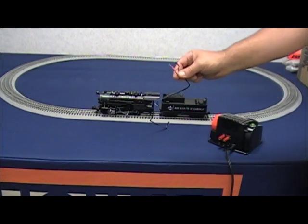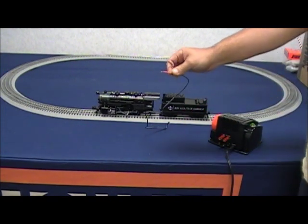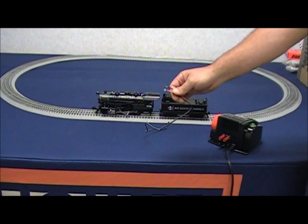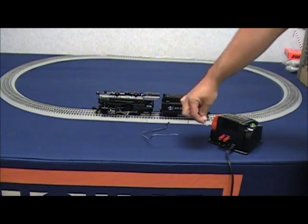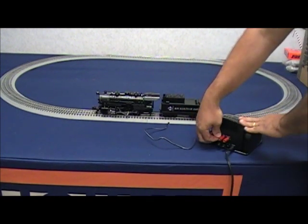We've already checked our wires underneath. Red does in fact go to the center rail and black goes to the outside rails. So now we're going to go ahead and connect it to the transformer to get our train running.